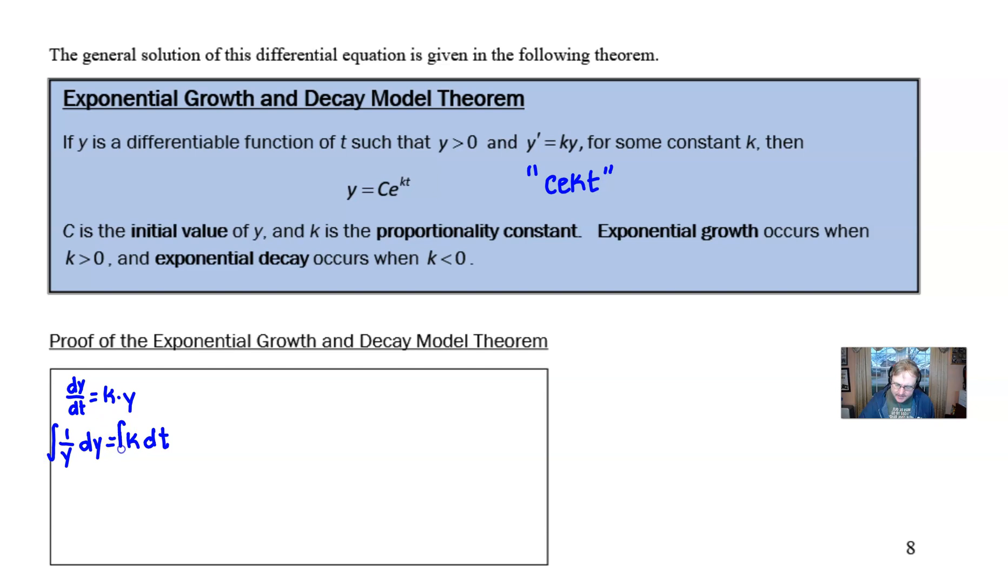From this point we can integrate both sides. You've seen the integration of 1/y many times, so you're comfortable with that being natural log of the absolute value of y. And the integration of k with respect to t would be kt, constant times the variable. And then don't forget your integration constant there. I know that's not quite looking like y = Ce^(kt), but we have to solve it for this y.